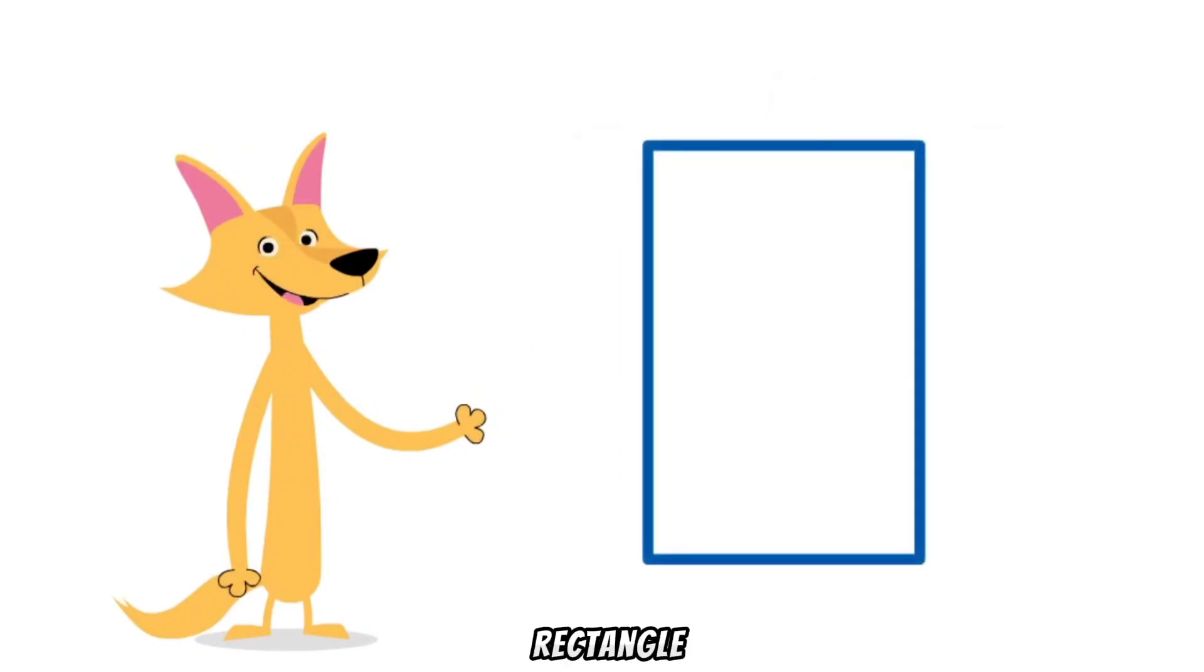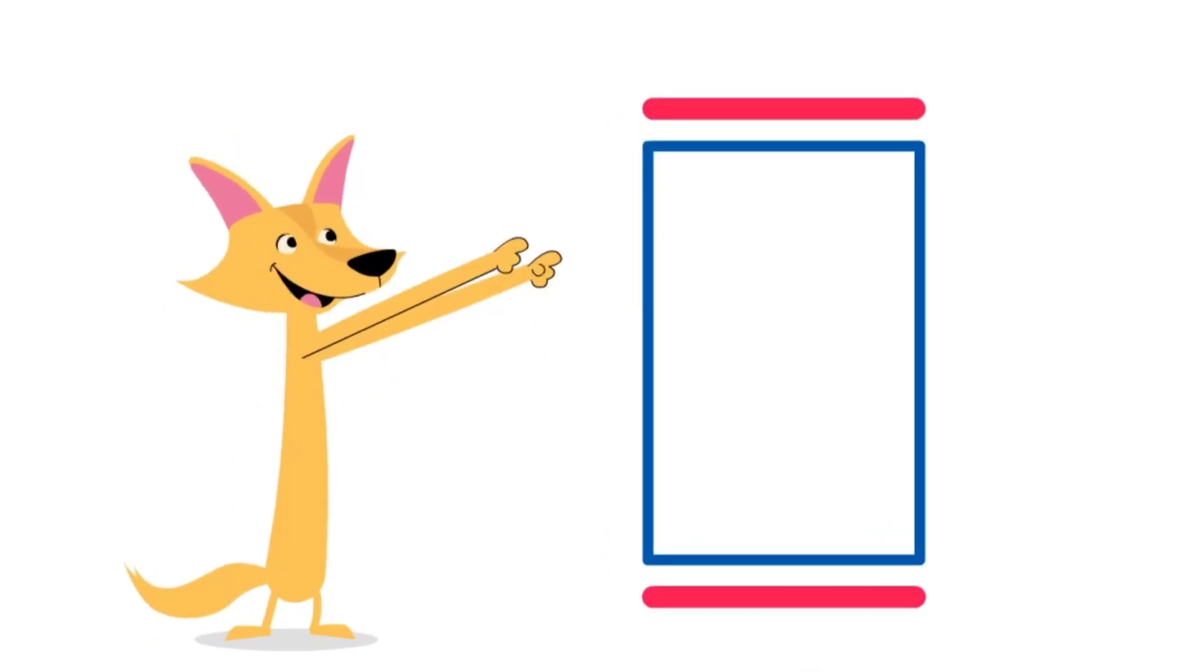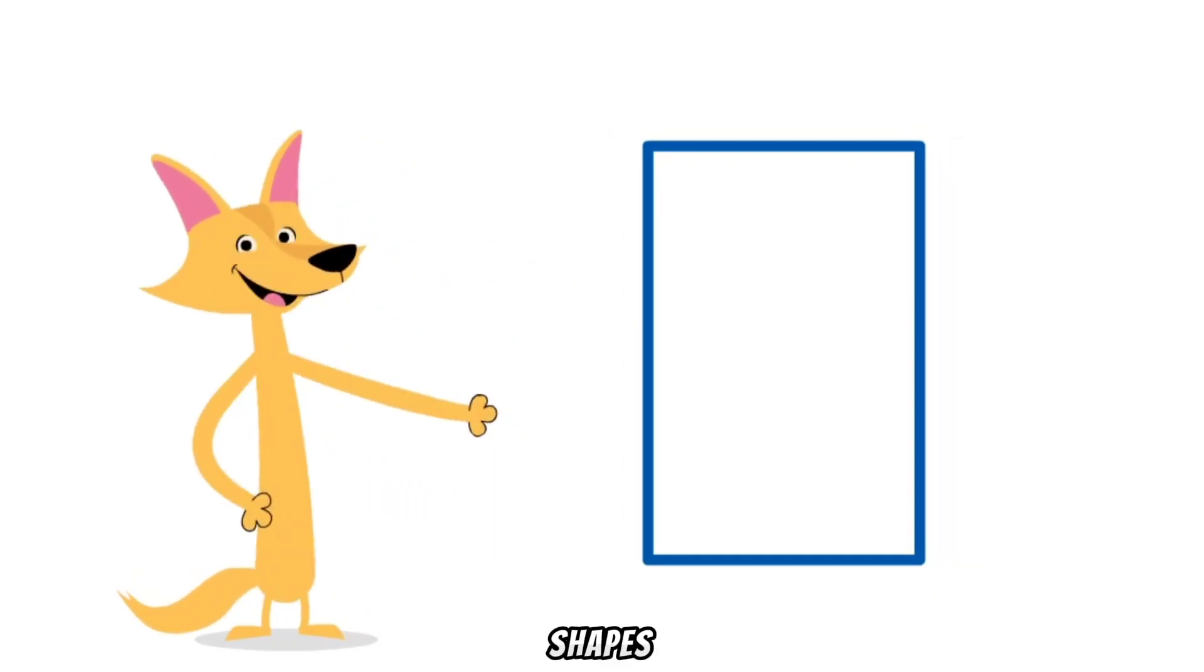A rectangle has four sides and four corners. The opposite sides are parallel. Shapes are so neat!